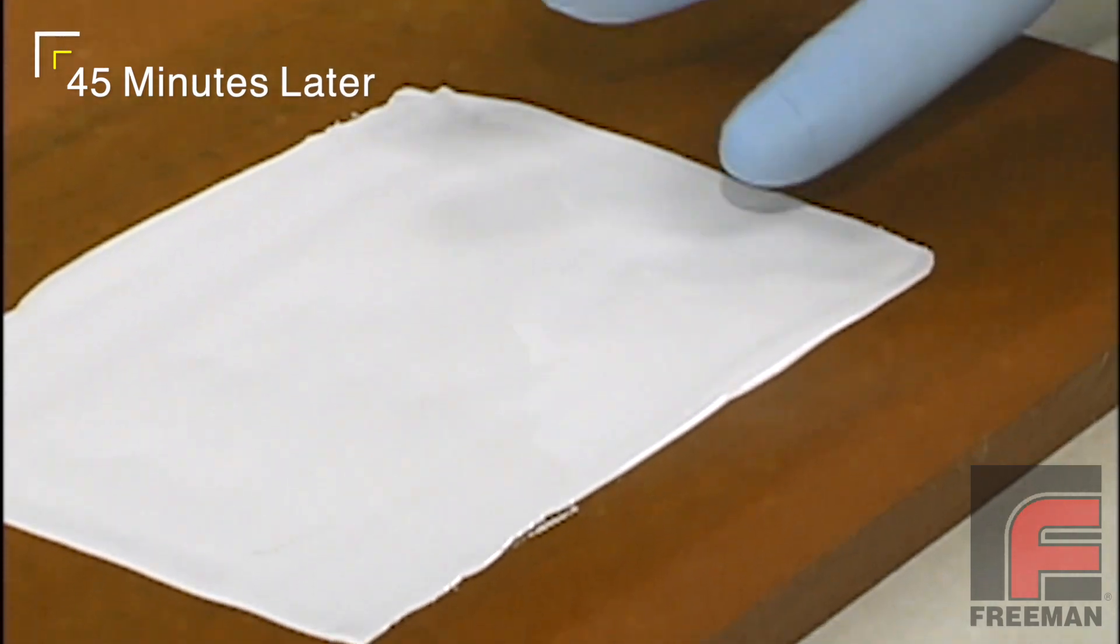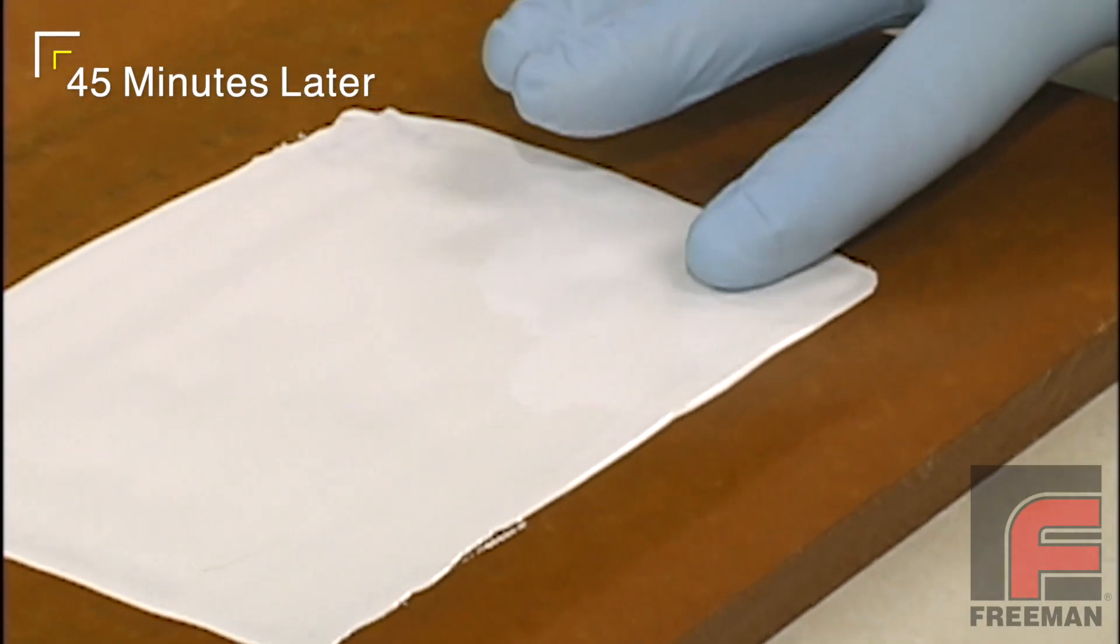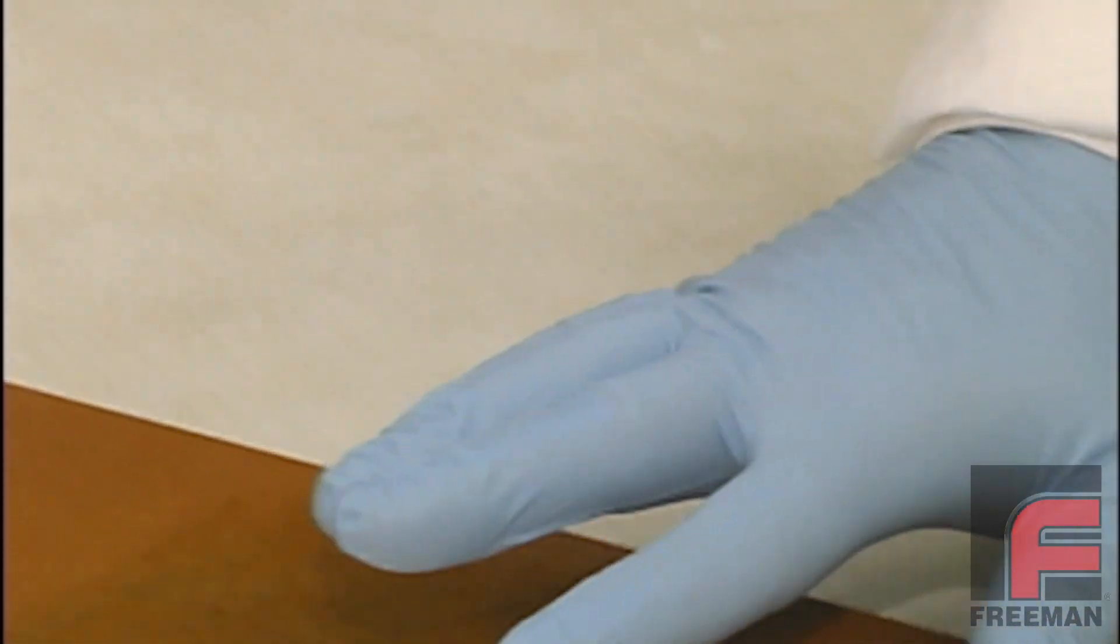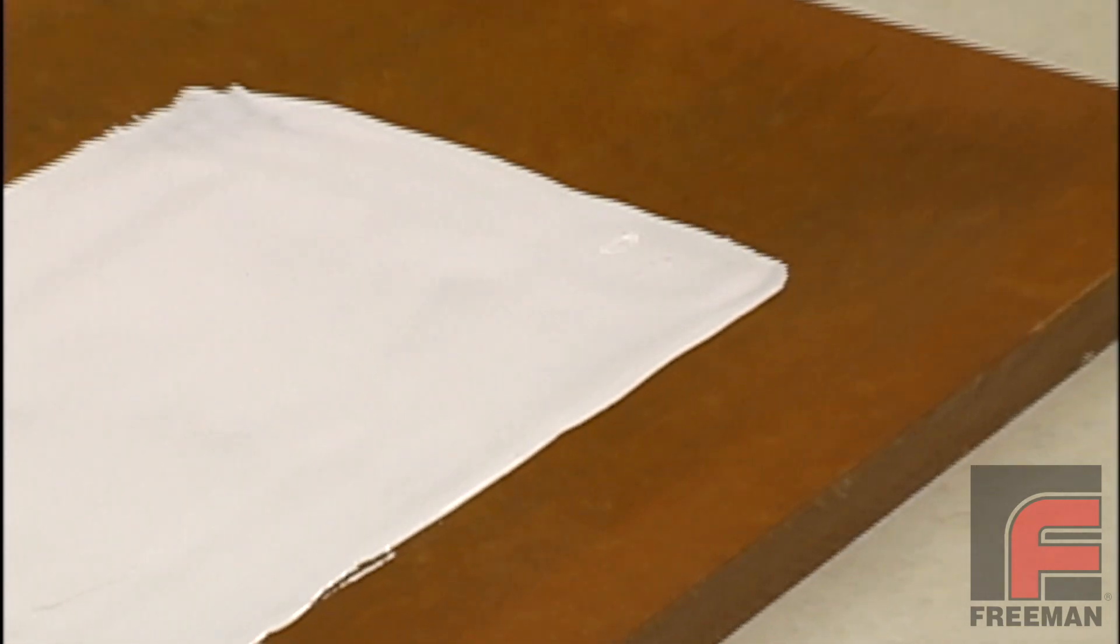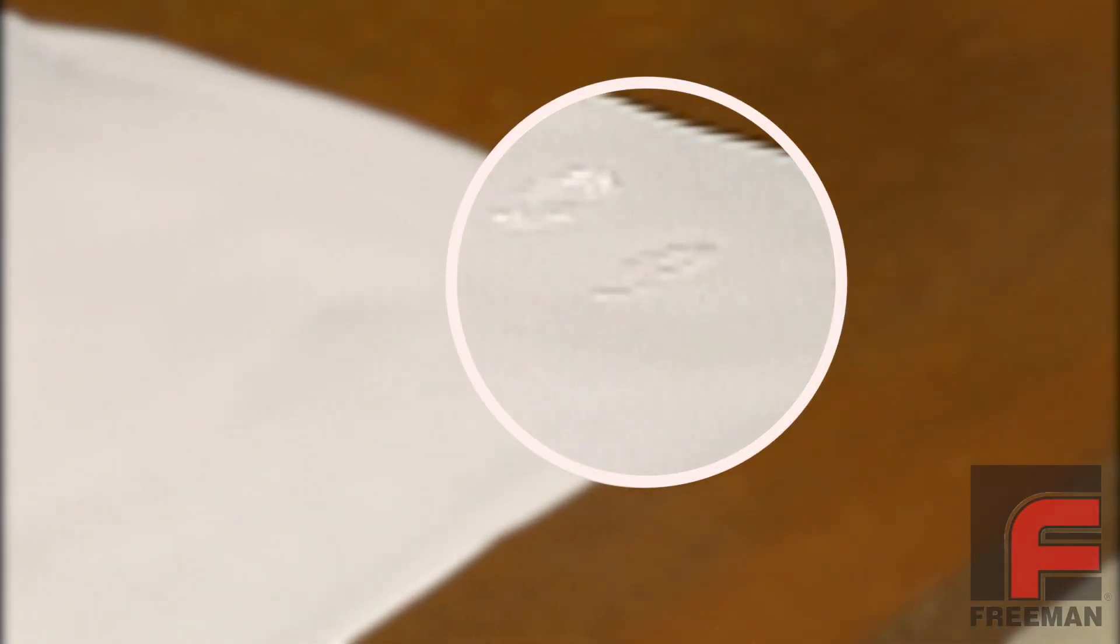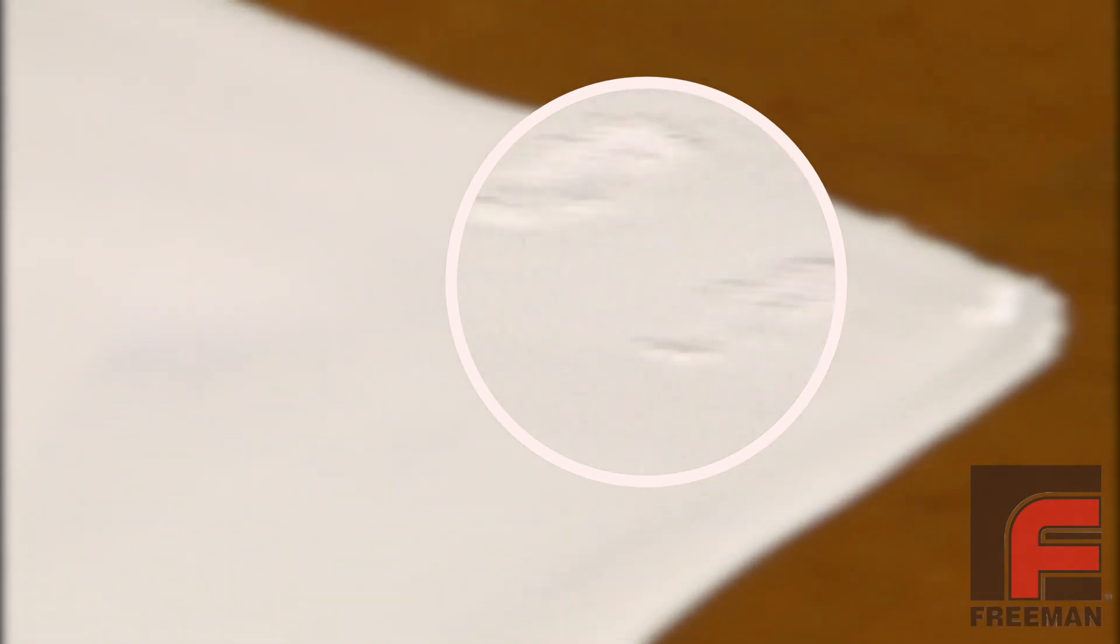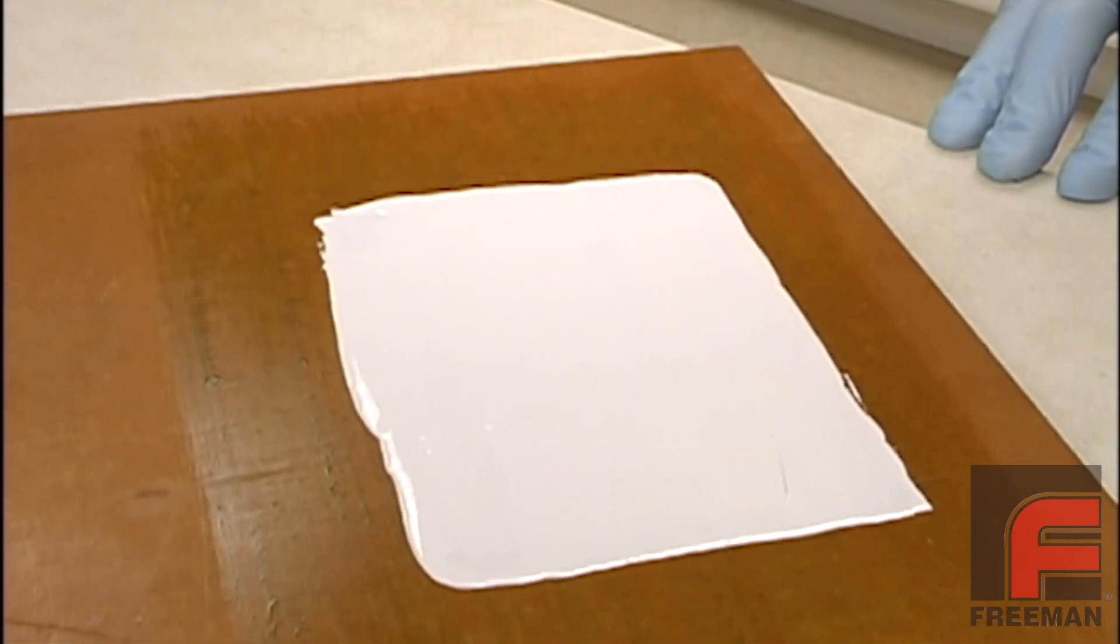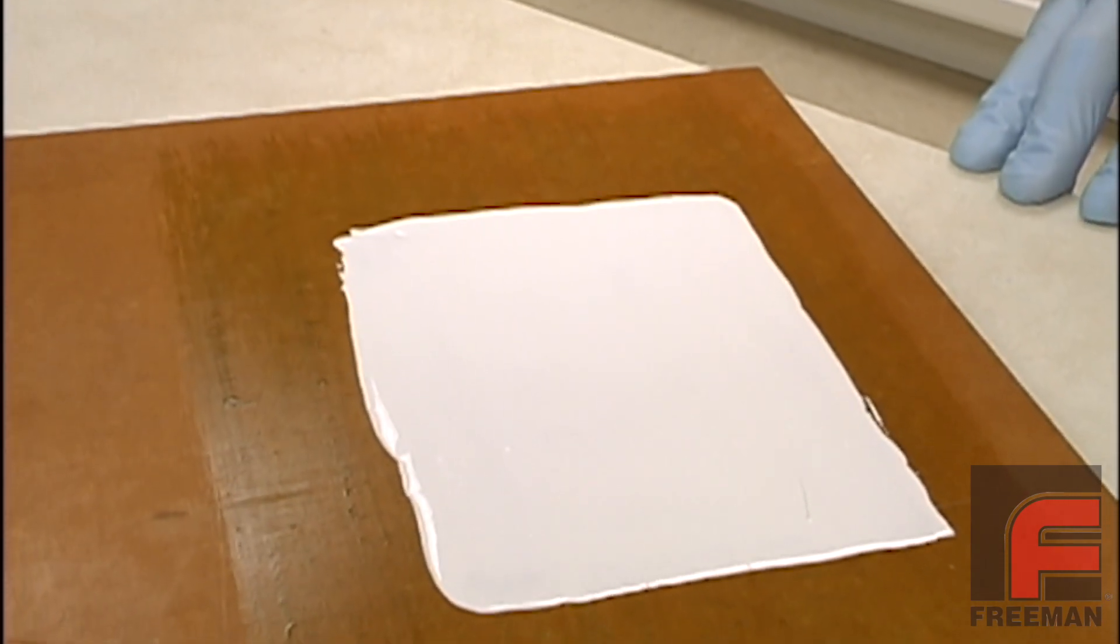Before applying each additional layer of surface coat, our goal is to reach an almost tack-free state. This is the point where no material comes off on our glove, yet our finger does leave an indentation in the material itself, as shown here. The reason for this is we are setting up for the next layer of material. You want the first layer to be hard enough that the second surface coat does not push through the initial layer, but is not fully cured so good adhesion is obtained between the two layers.